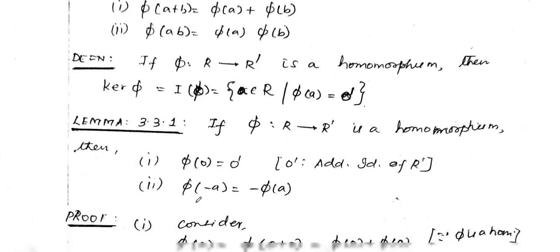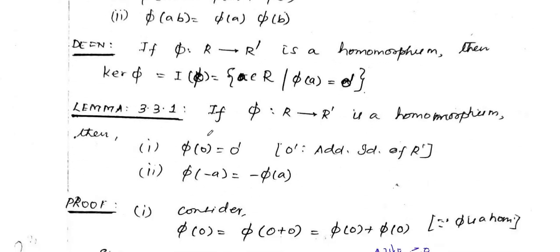The first lemma gives us the properties of ring homomorphism. It states that a homomorphism takes the zero element of the domain, also called the additive identity of the domain, to the additive identity of the codomain. And the second property is that the image of the inverse of an element is the inverse of the image of the same element.